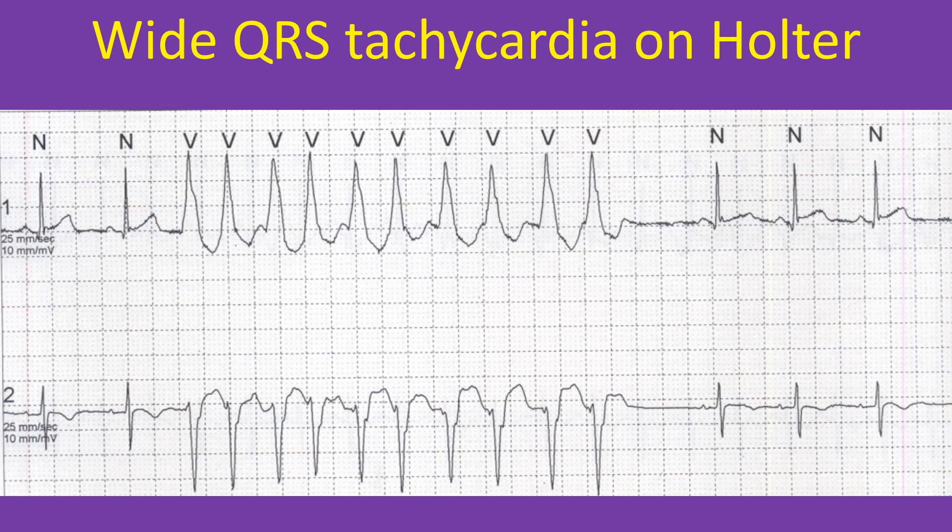The strip shown has two channels showing a couple of narrow QRS beats initially and three narrow QRS complexes at the end of the record. These are normal sinus beats marked N by the device, with normal P waves, PR interval, QRS and T waves. In between there is a run of wide QRS tachycardia marked as V by the device.